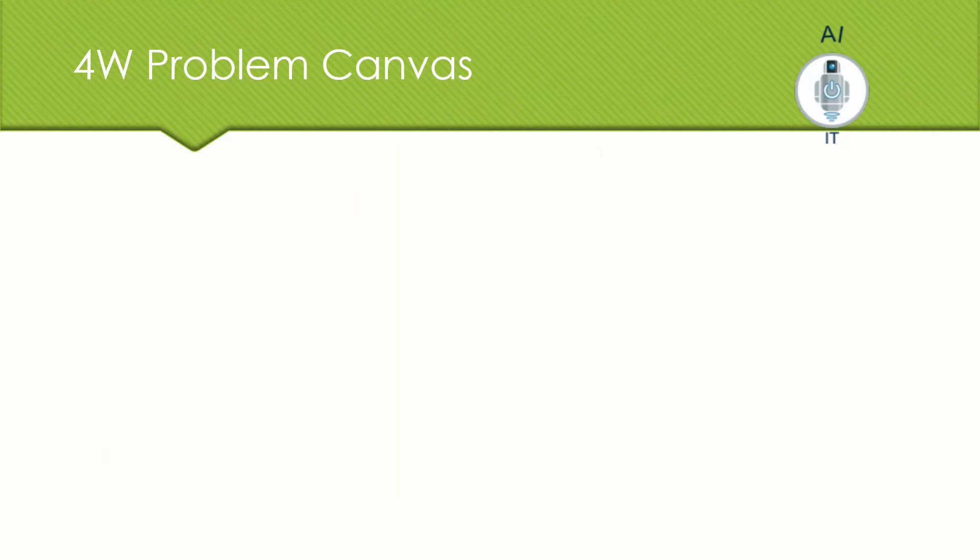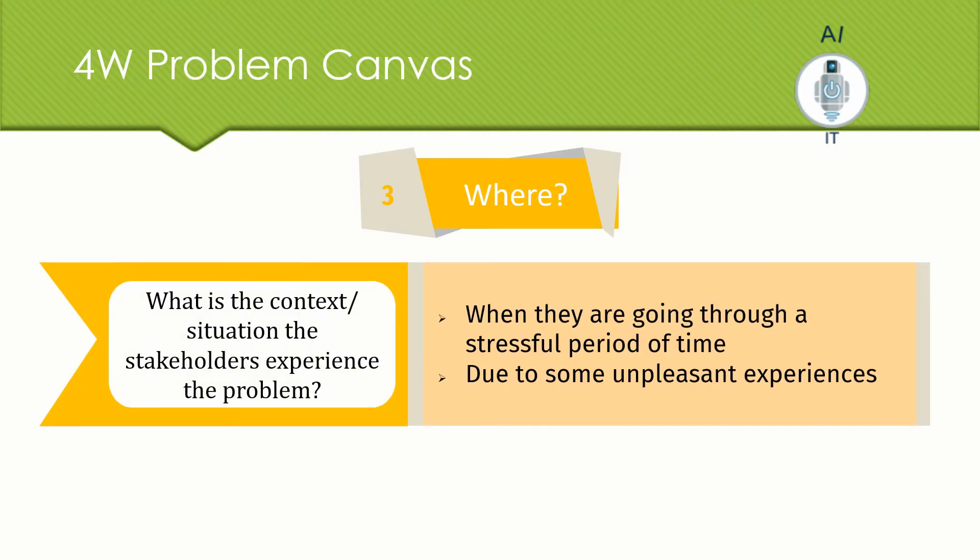Now, we move on to the third block, the WHERE block in which we look into the context or situation where the stakeholders are experiencing this problem. What is the context that we are talking about here when they are going through a stressful period of time? They may have encountered some unpleasant experiences. They are not able to cope up with the stress, some kind of a pressure, some kind of a problem in their relationship, some unpleasant experiences where they experience depression.